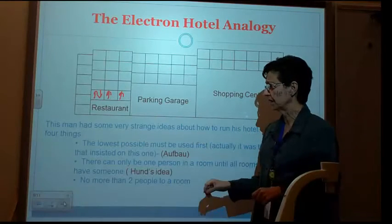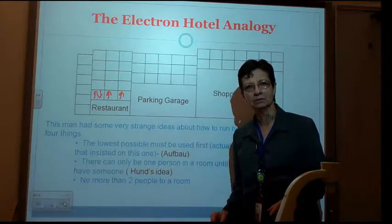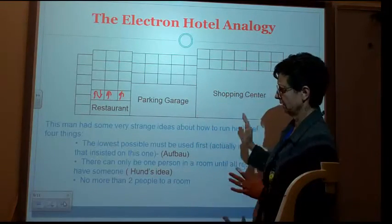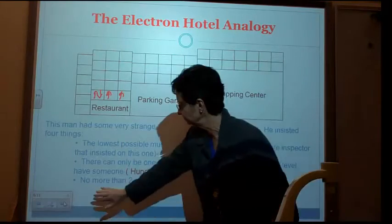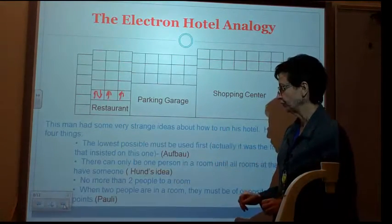All right. His other rule is that no more than two people to a room, period. Cannot happen. So no more than two people to a room, and he keeps that for his entire hotel. And that is, that goes with Pauli exclusion theory.